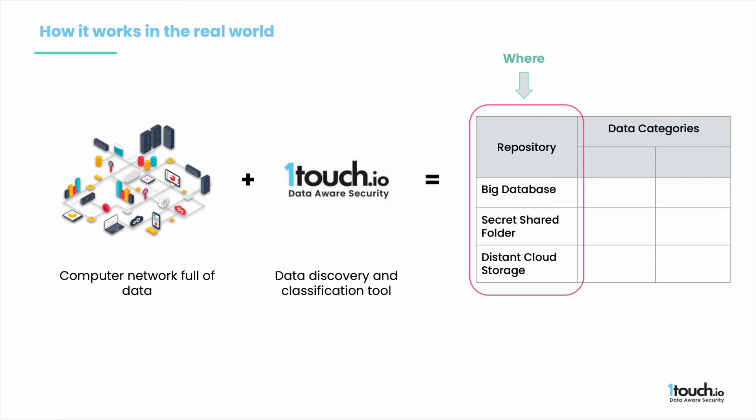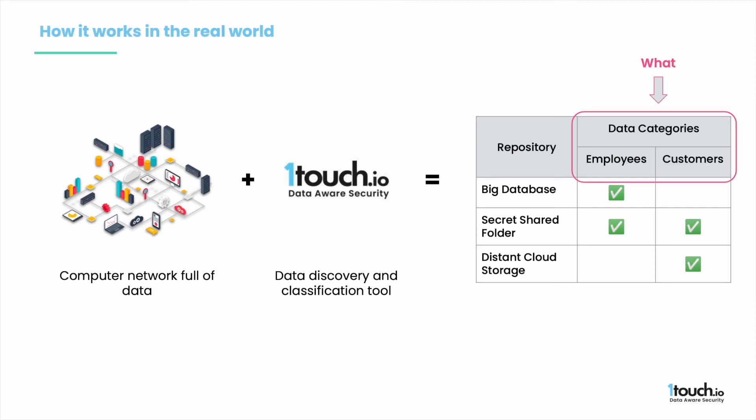Data discovery and classification tools can vary in many different ways. For example, some of them can find all the data sources automatically, while others need to be provided with a complete list of repositories. A discovery and classification program produces a list of data repositories where data lives and also classifies all the information found based on your business purposes and reasons for processing the data.